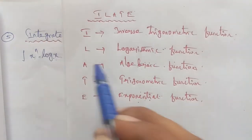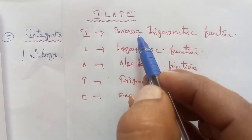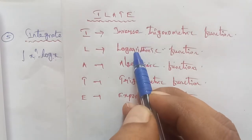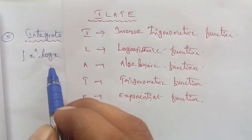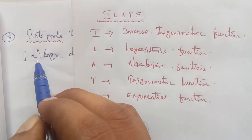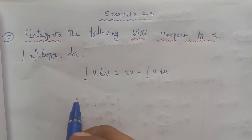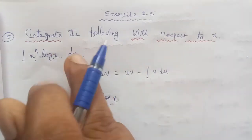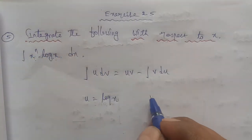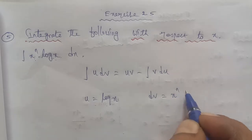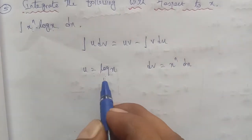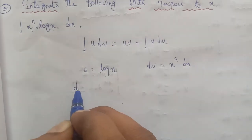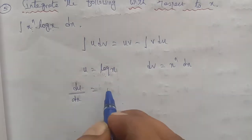Next, the given question also has log x. So u is equal to log x, and dv is equal to x power of n dx. So du is equal to d by dx of log x, which gives 1 by x.